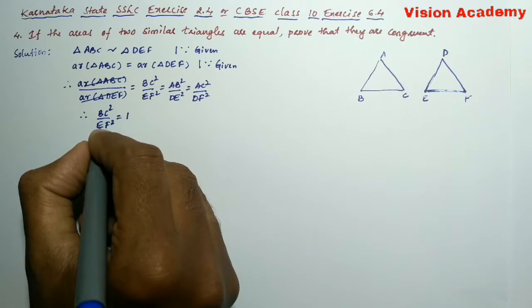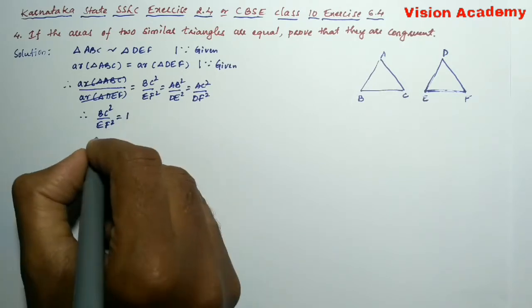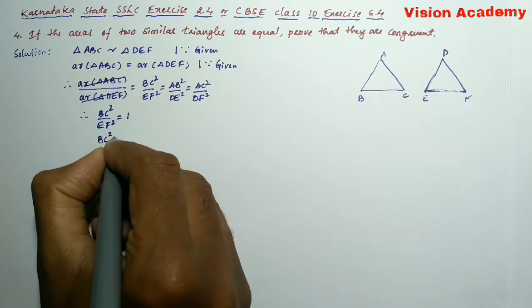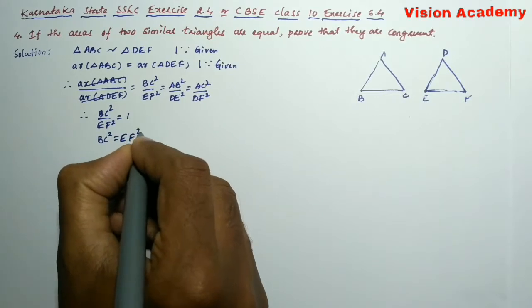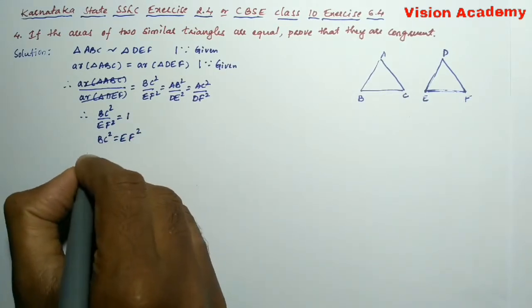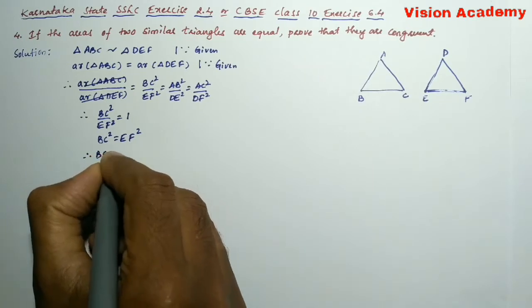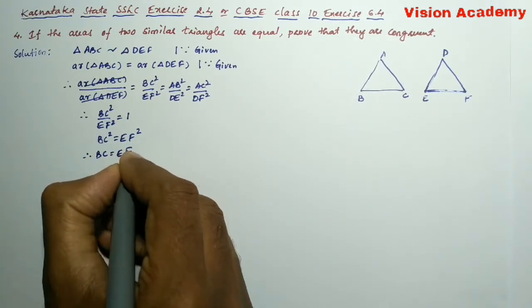Now, transform this EF square from LHS to RHS. Now, it will become BC square is equal to EF square. Here, square, square will get cancelled. We will get, therefore, BC is equal to EF.